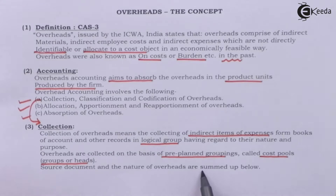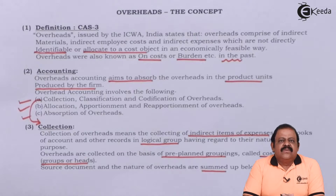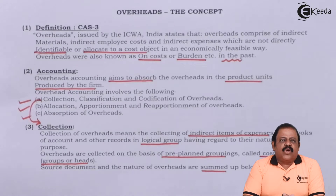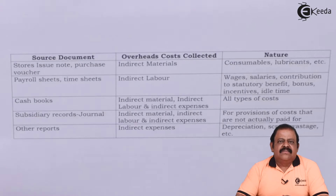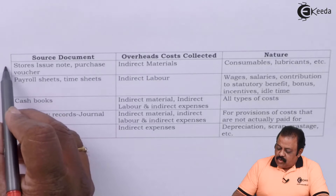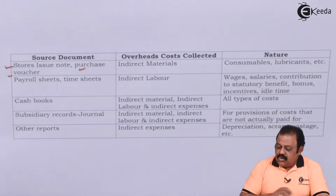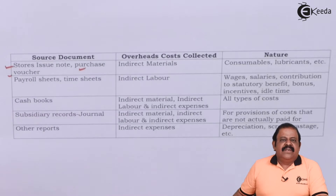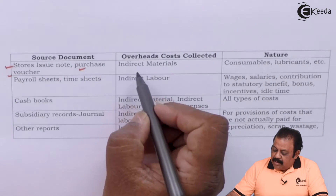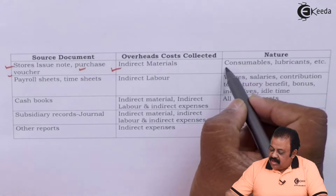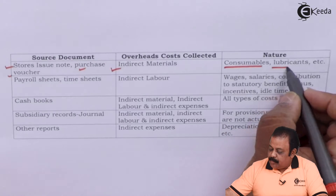Source documents and the nature of overheads are summarized here. We require evidence from documents arising in transactions to understand the expense of overheads. The first source document is the stores issue note or purchase voucher. Whenever a department requires some material, they raise a note to the store department, which supplies the required material to that plant or job. These documents give us information about indirect materials, such as consumables or lubricants.